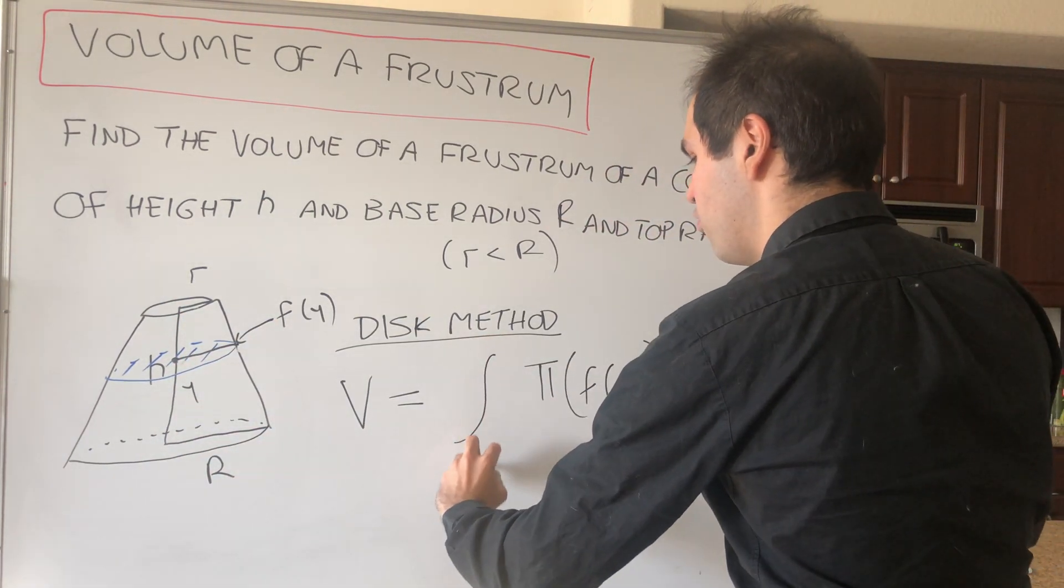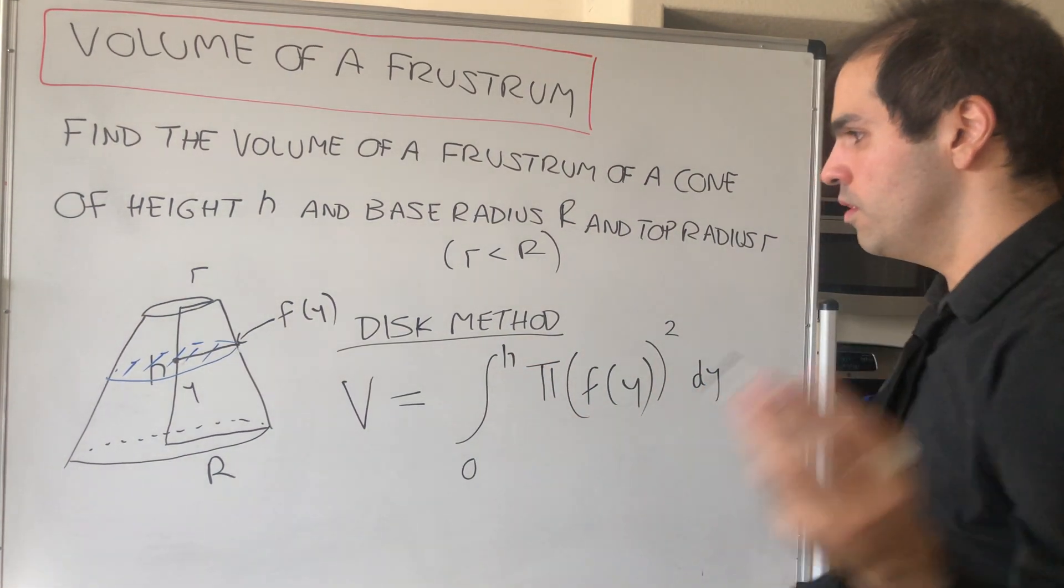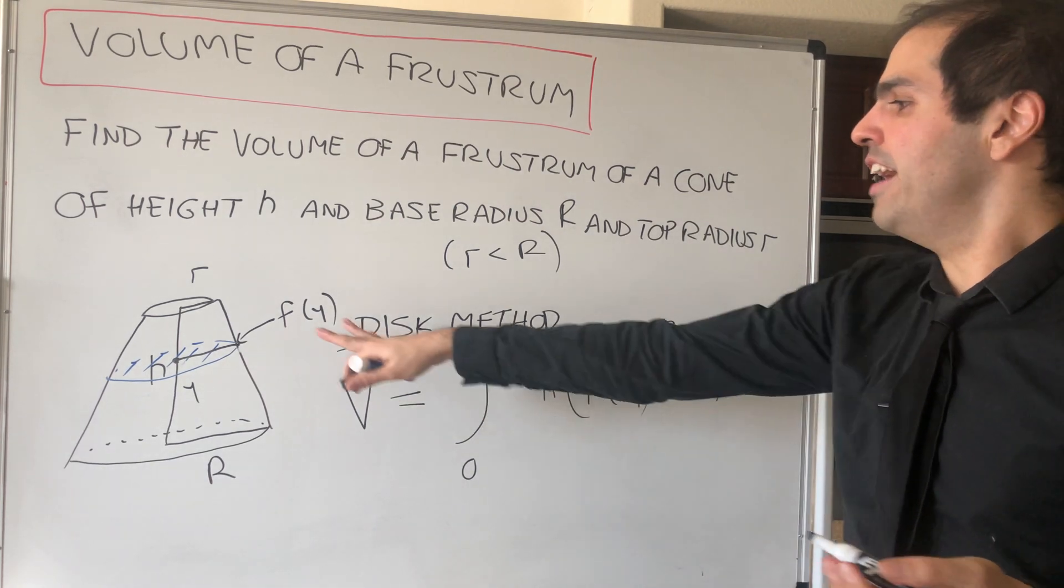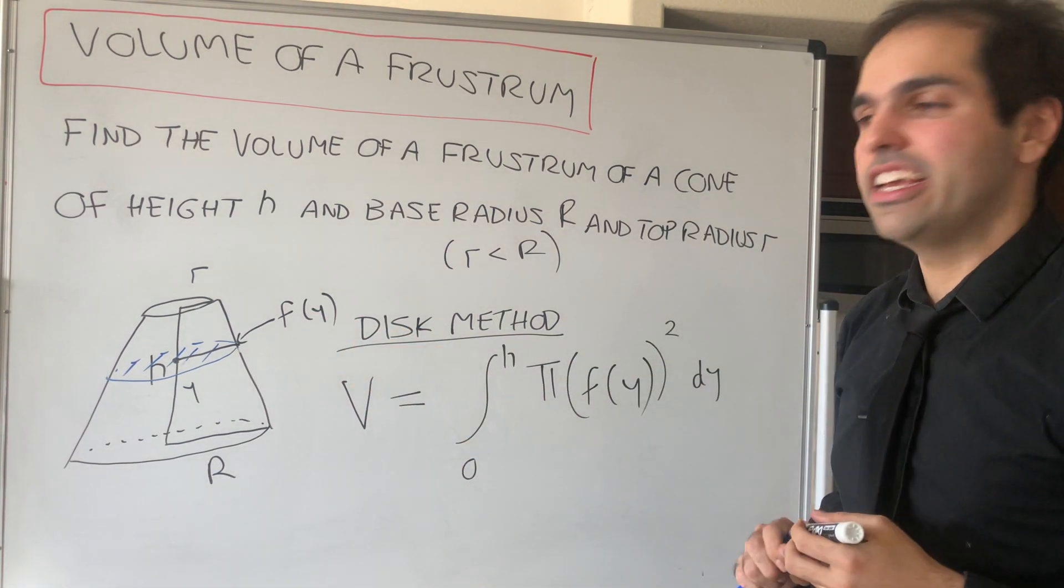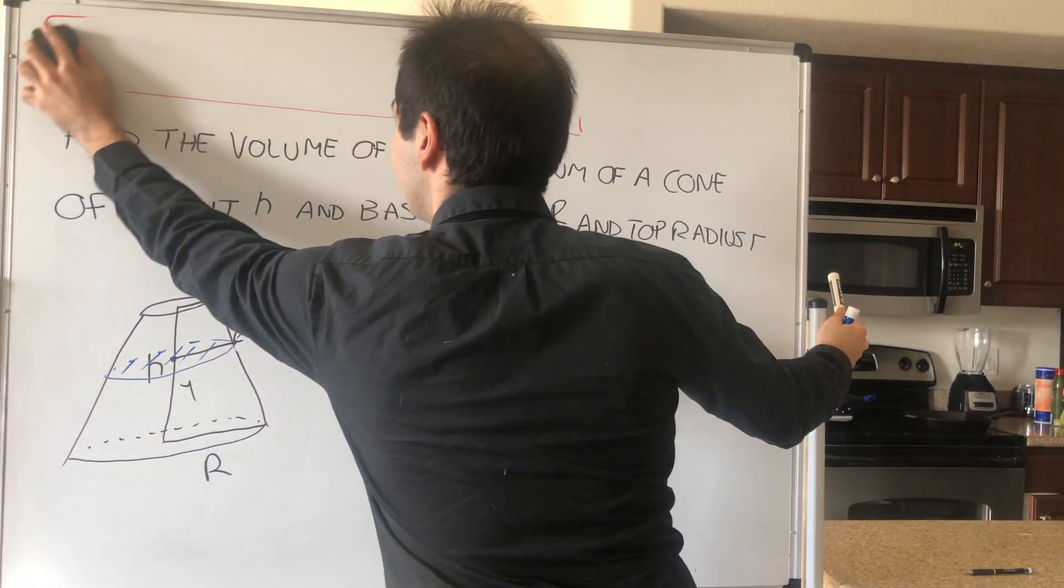So integral from 0 to h, pi f of y squared dy. So all we need to do is find this mystery function and integrate it. Well, now let's find a function, and you'll see it's not too bad.